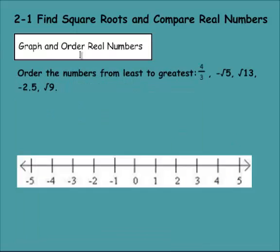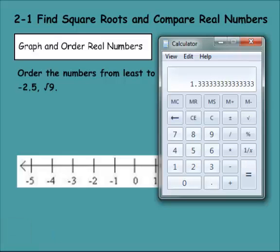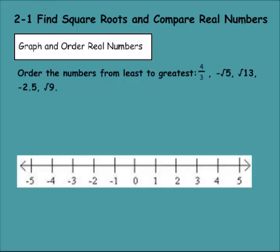Let's look at these numbers then. Order the numbers from least to greatest. 4 over 3, negative the square root of 5, square root of 13, negative 2.5, and then the square root of 9. We have to put these under the number line to solve these. We have 4 over 3, that is 1.3, it is a repeating decimal. If I'm going to put that over here, I would say not quite half, it would be right around here where 4 over 3 would go.